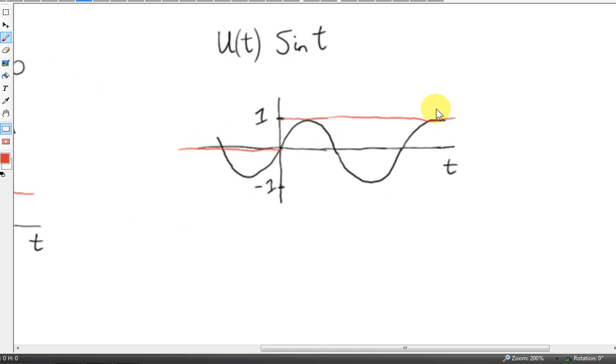But over here, we're just multiplying one by sine of t. So we're just getting the graph of sine of t for positive t. So we end up with this graph here.